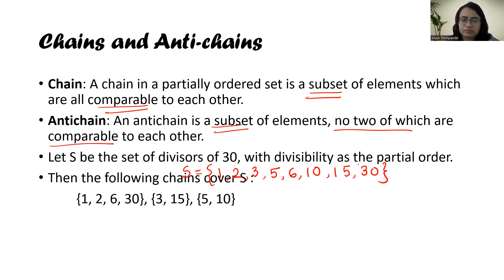So among them, the chains are nothing but the subsets of this particular set S in which all the elements are comparable. Comparable in the sense, in this first subset, if you consider the elements 1, 2, 6, and 30, all of these elements are divisible by one another. That means 2 is divisible by 1, 6 is divisible by 1, 30 is divisible by 1.